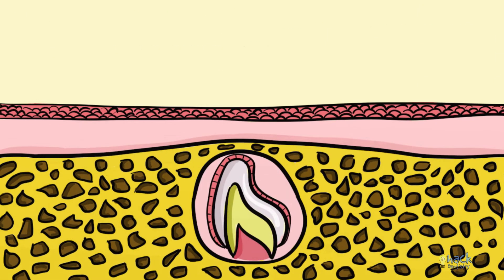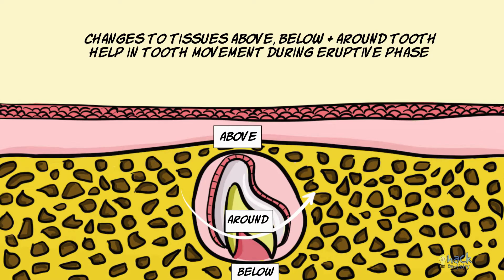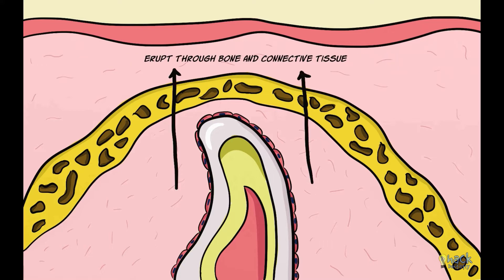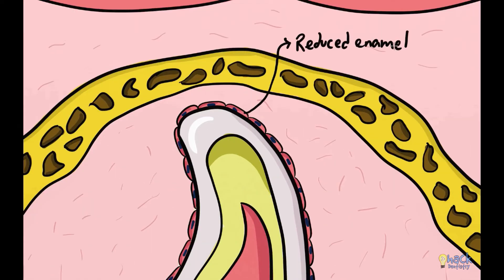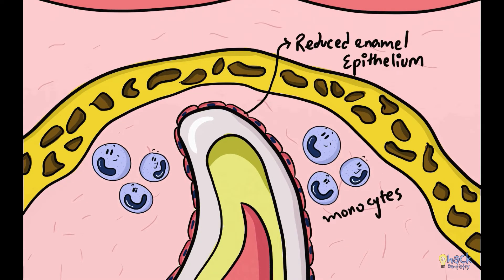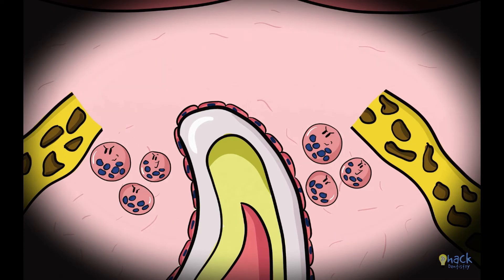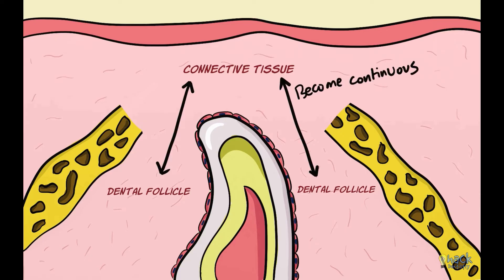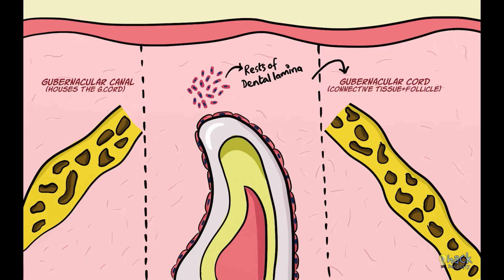Several changes to tissues happening above, around, and below the teeth facilitate movements of the eruptive phase. For teeth to successfully erupt, they must move through the overlying bone and connective tissue, meaning an eruptive pathway must be established. The reduced enamel epithelium attracts monocytes which differentiate into osteoclasts, and resorption of the bony crypt is accomplished by these osteoclasts. Once this happens, the dental follicle surrounding the tooth becomes continuous with the lamina propria of the overlying oral mucosa. This portion of the fibrous dental follicle is called the gubernicular cord and also contains remnants of the dental lamina. The canal housing the gubernicular cord is called the gubernicular canal.